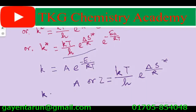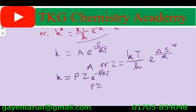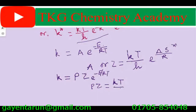Small k equal to p into Z, into e to the power minus E by RT. Therefore, p times Z equal to small kT divided by h, into e to the power del S star divided by R.